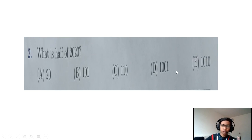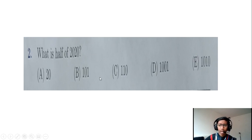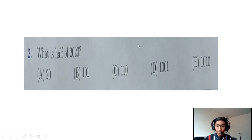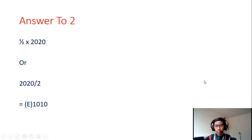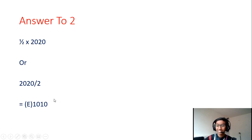Moving on to the next question: what is half of 2020? We can divide 2020 by two, or multiply it by one half — both are the same thing. I prefer half times 2020 as that's much easier. The answer is 1010, so the correct answer is E for question number two.